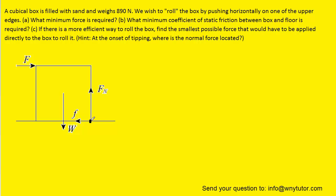What we'll do is actually choose this corner point as our pivot and apply the sum of the torques equals zero equation. We know that the sum of the torques is equal to zero because the box is not accelerating in an angular fashion as it's being tipped over — it's just being tipped over at a nice constant speed. So the sum of the torques would indeed equal zero.